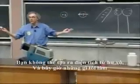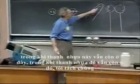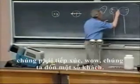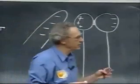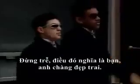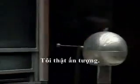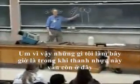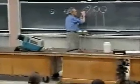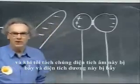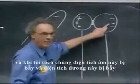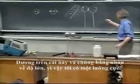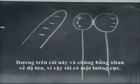And now what I do, while this rubber rod is still there, I separate them. Here they are in contact with each other first — they have to be in contact. While the rubber rod is still in place, I take them apart. And when I take them apart, the negative charge is trapped and the positive charge is trapped. So I have thereby created negative charge on this one and positive on this one, equal in magnitude. So I have a dipole.